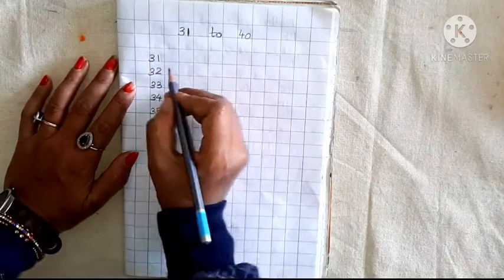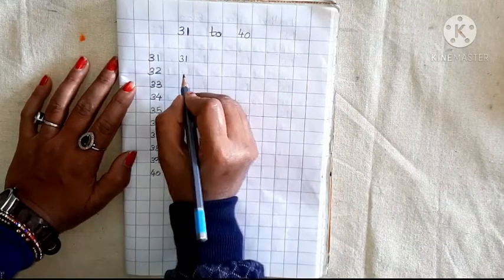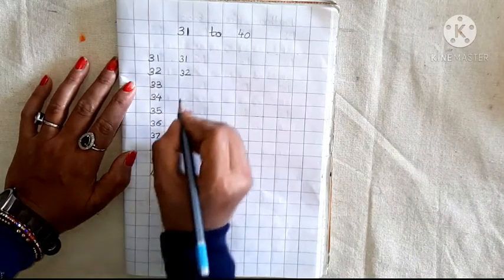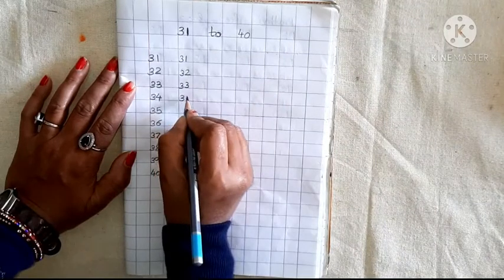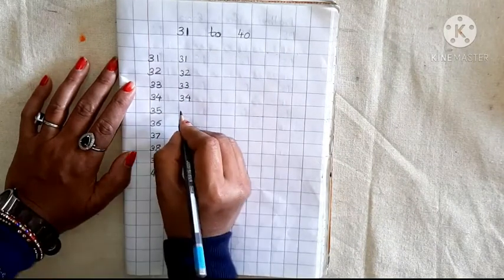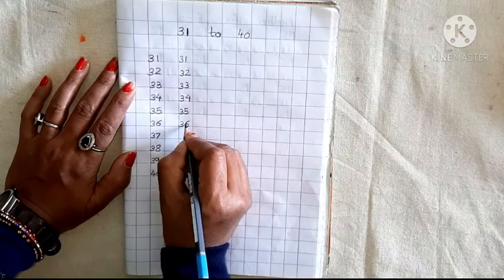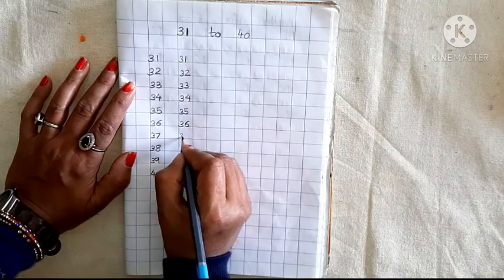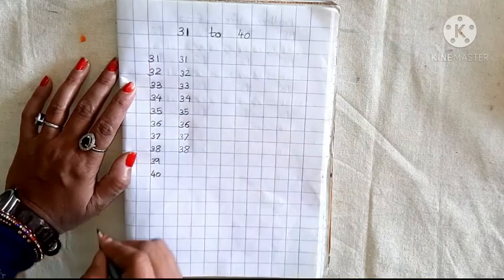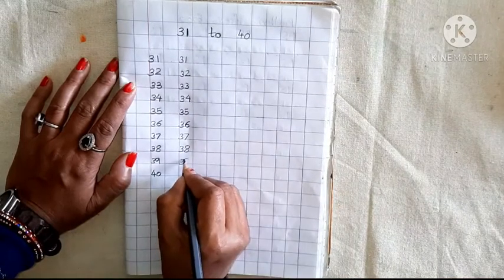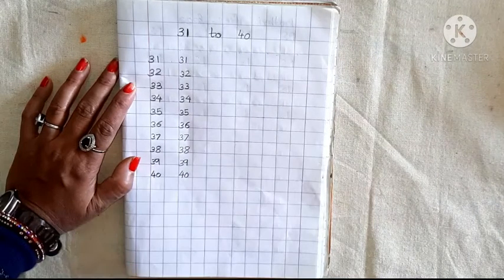Again. Leave one box and right here. 3, 1, 31. After 31, 3, 2, 32. After 32, 3, 3, 33. After 33, 3, 4, 34. After 34, 3, 5, 35. After 35, 3, 6, 36. After 36, 3, 7, 37. After 37, 3, 8, 38. After 38, 3, 9, 39. After 39, 4, 0, 40.